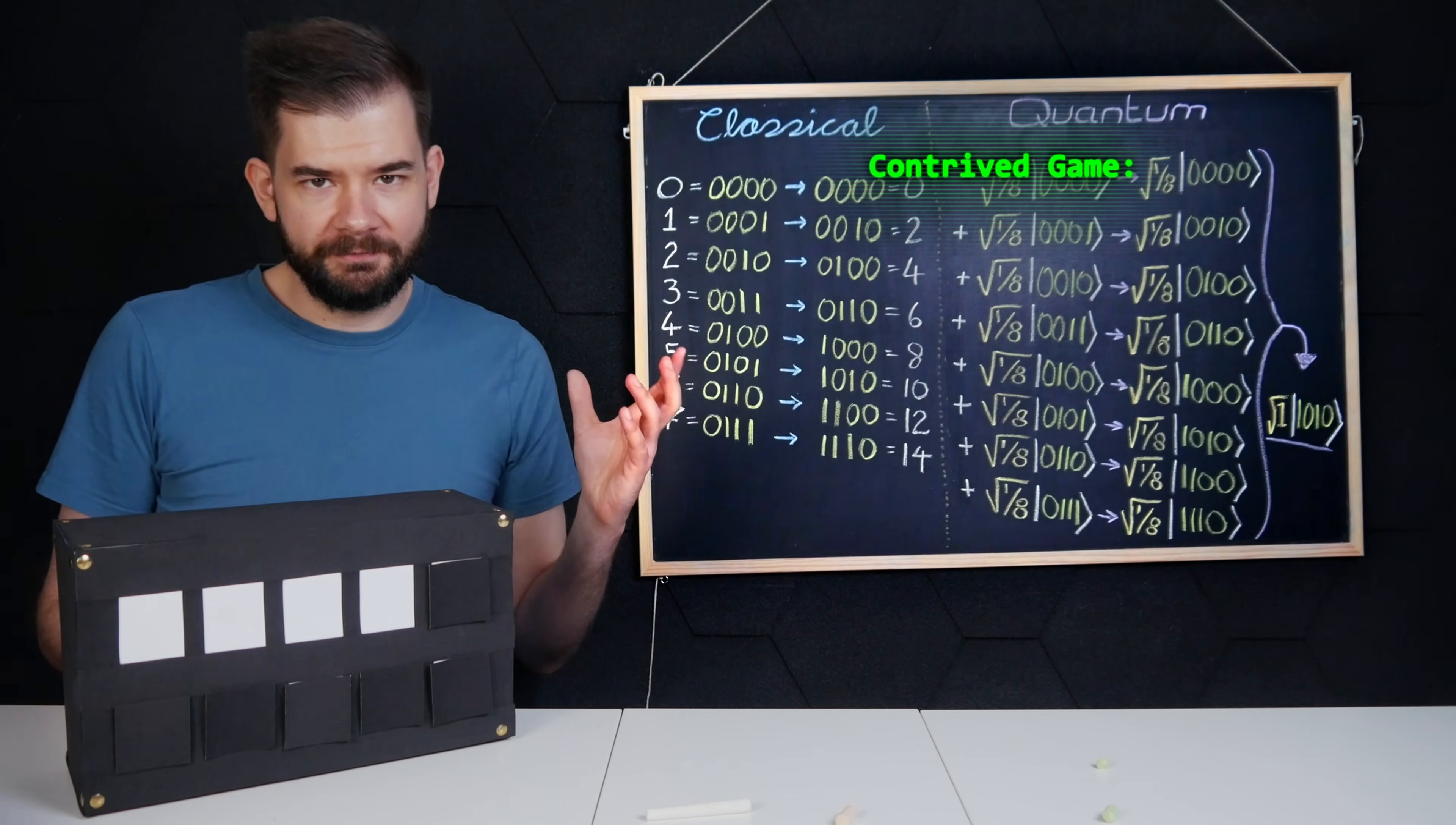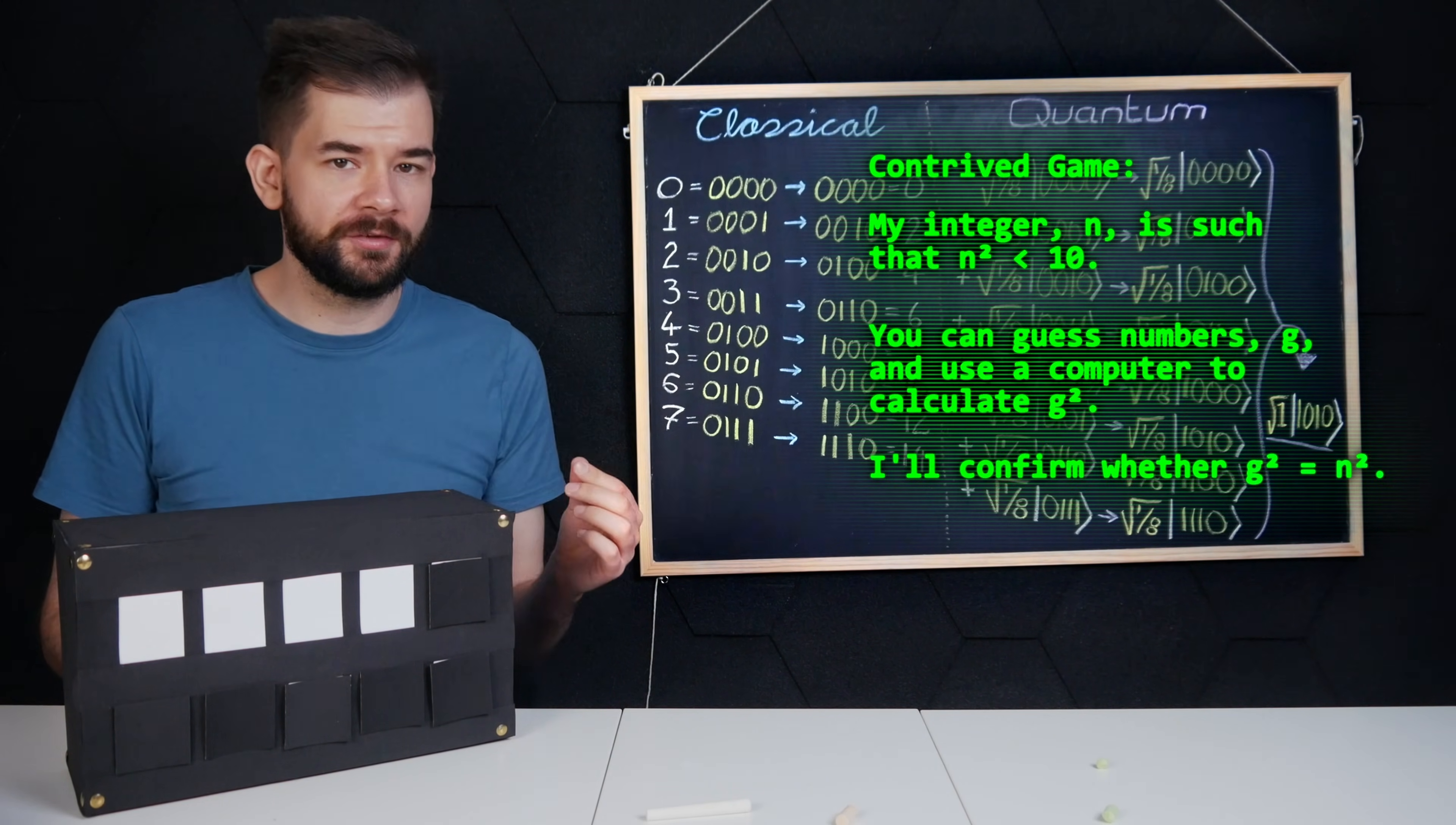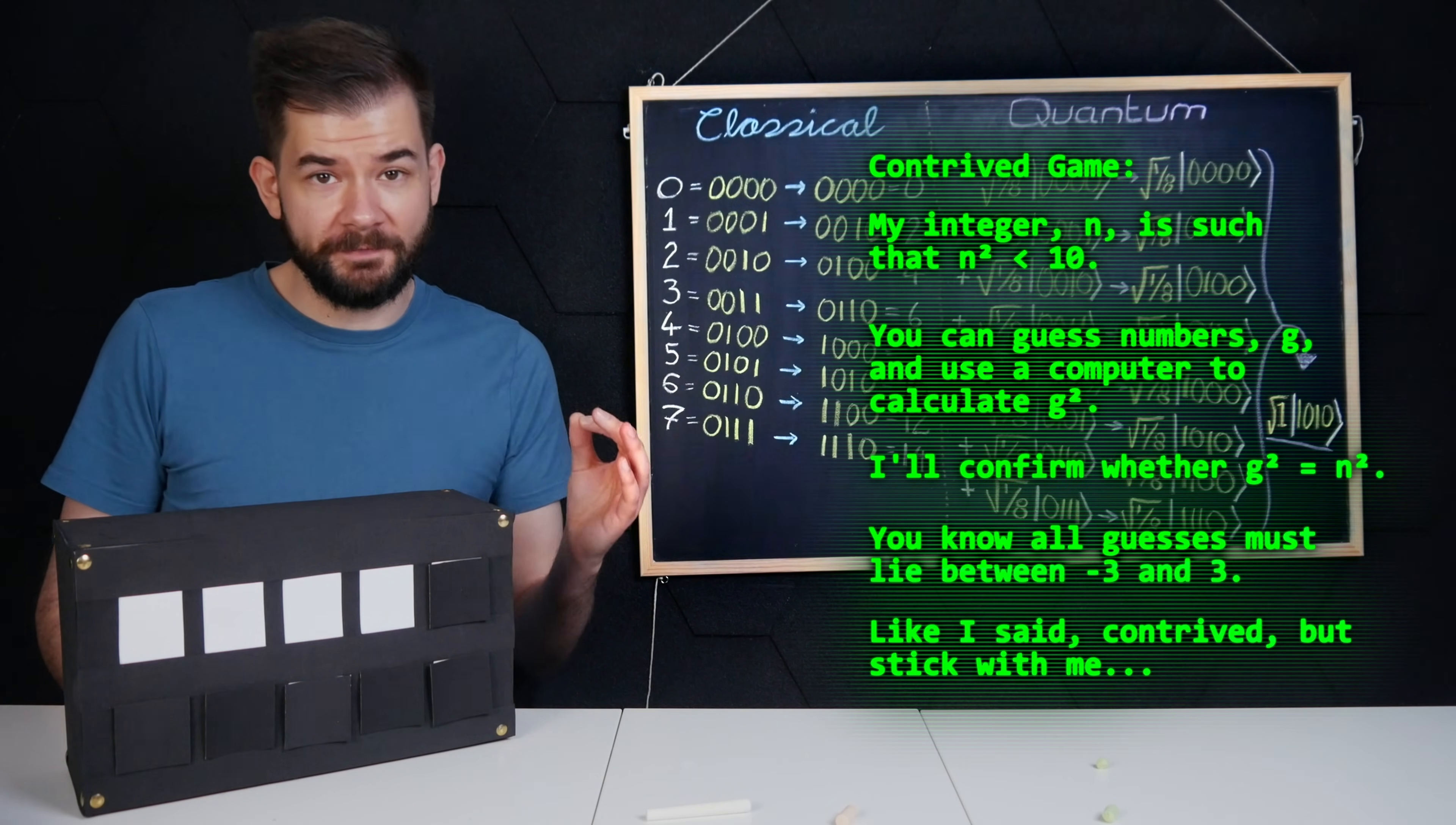Well, let's play a very contrived game. I'm thinking of an integer, and I'll tell you that its square is less than 10, and I'll tell you when you're looking at the correct square. For this example, let's assume you know enough to realize it has to be between minus three and three, but you need a computer to verify the solution.